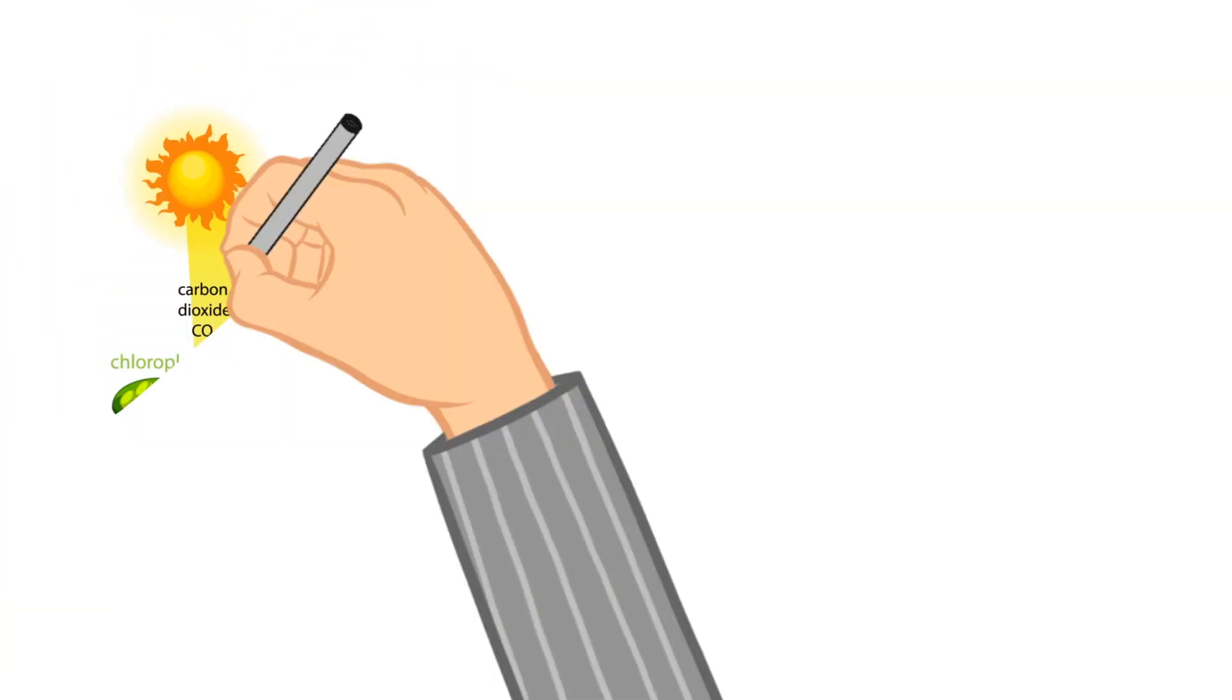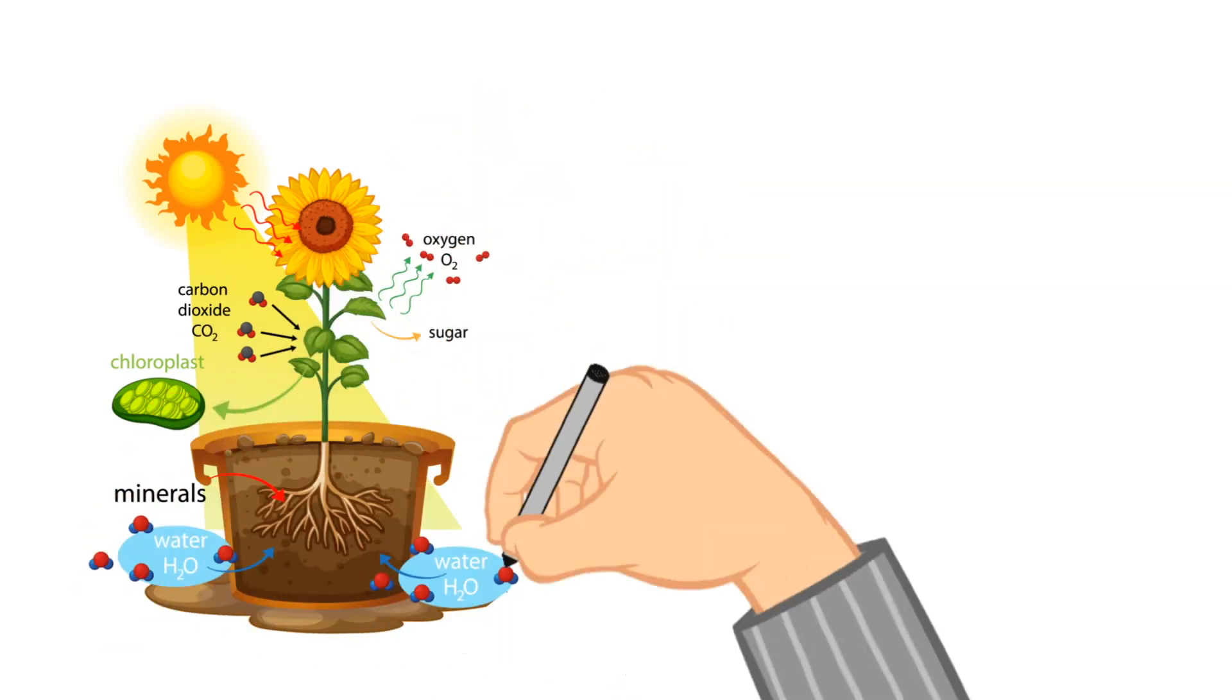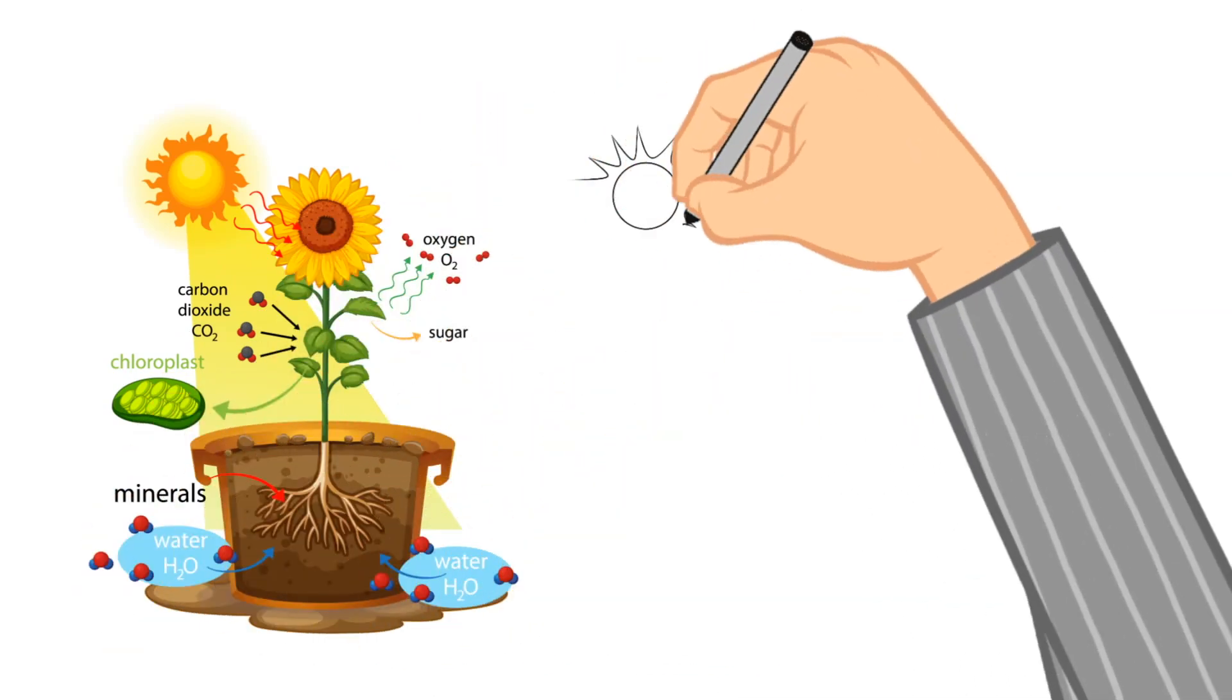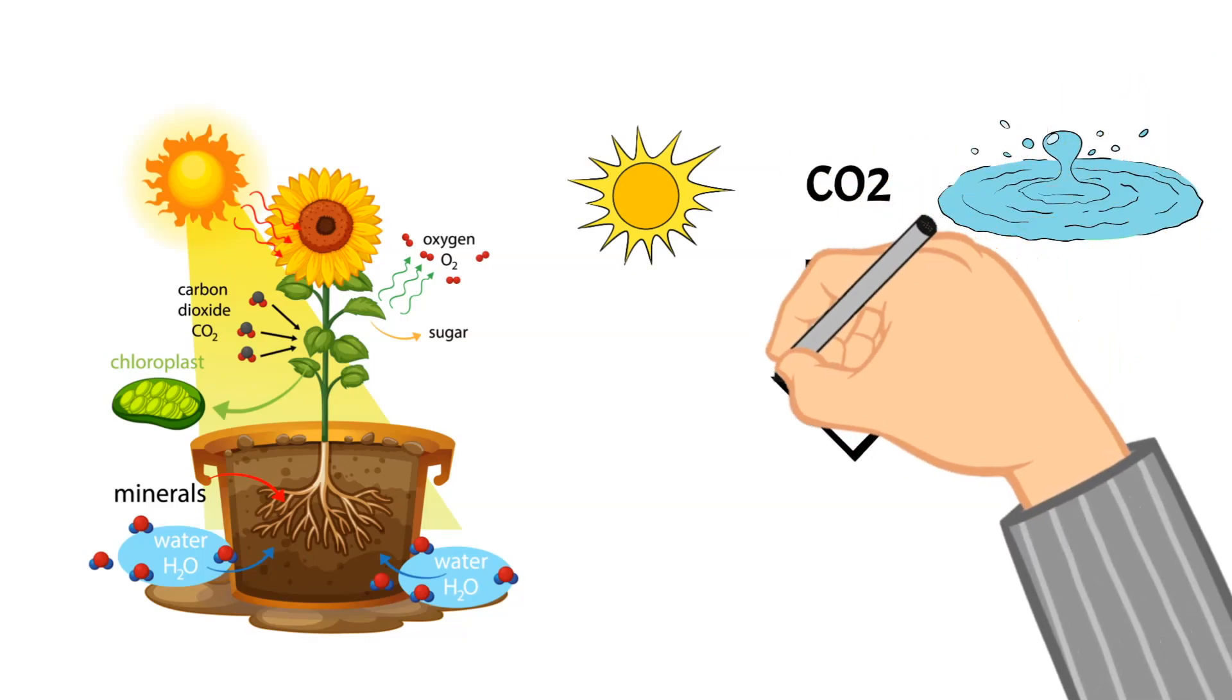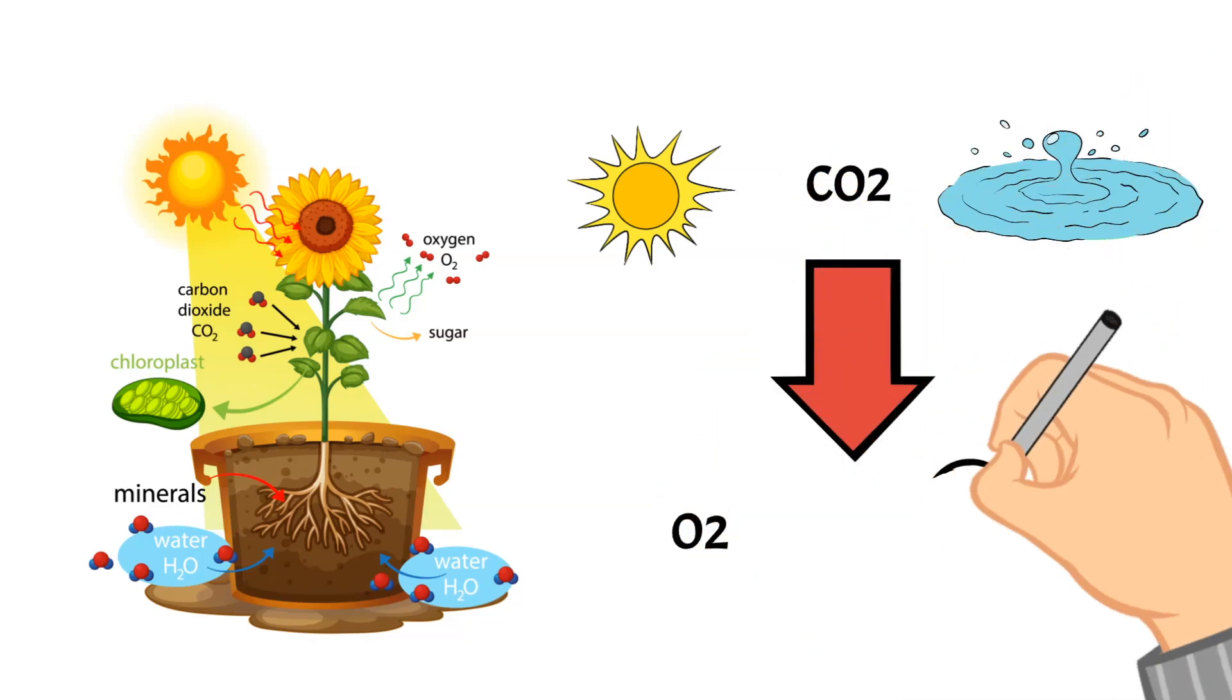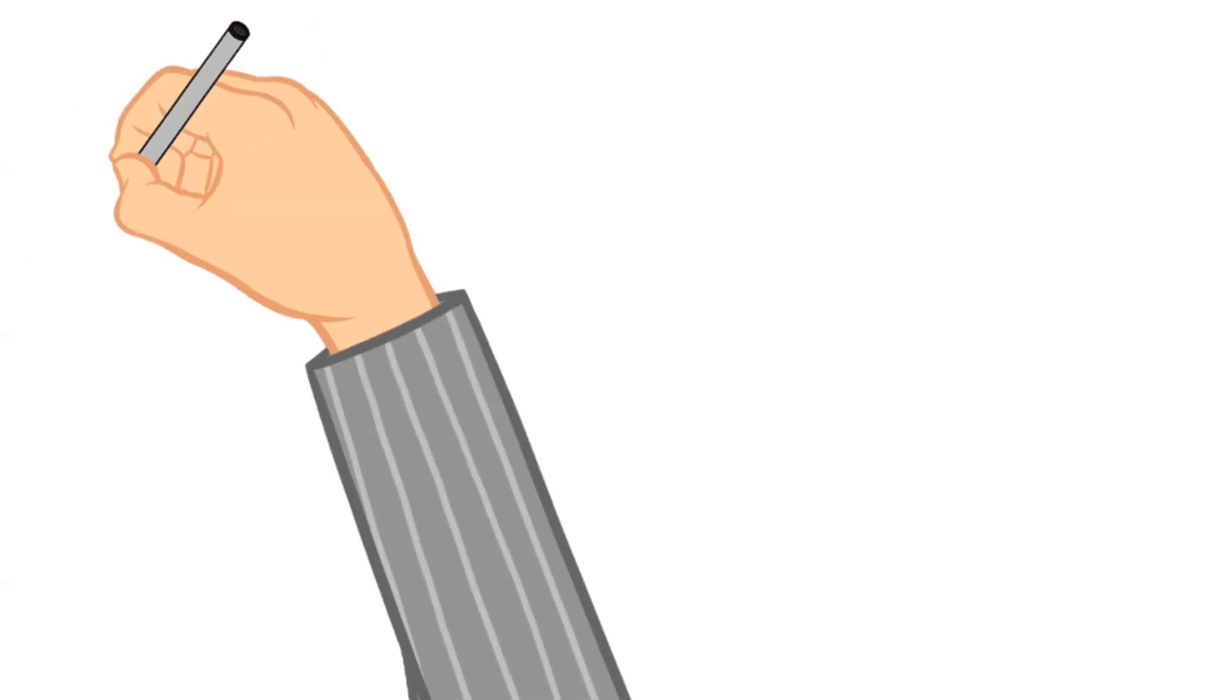One of the ways it does this is through photosynthesis, and we've talked about photosynthesis in the past, but plants use photosynthesis to make energy from sunlight, carbon dioxide, and water. And they turn this into oxygen and sugar.